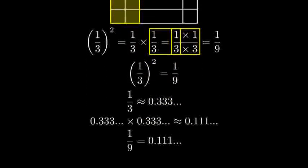We can verify this is correct because one-ninth is approximately 0.111, and if you multiply one-third, about 0.333, by itself, you indeed get 0.111.